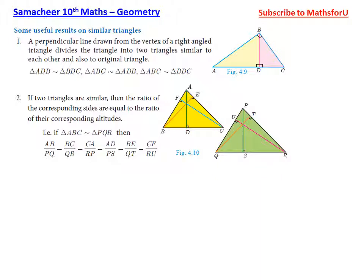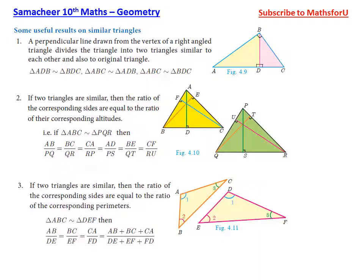If two triangles are similar, then the ratio of their corresponding sides is equal to the ratio of their corresponding perimeters. This is an important result. If triangle ABC is similar to triangle DEF, then AB/DE equals BC/EF equals CA/FD, and this ratio equals (AB+BC+CA)/(DE+EF+FD).